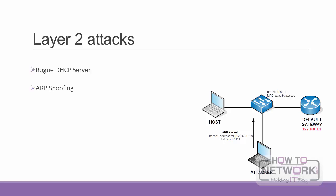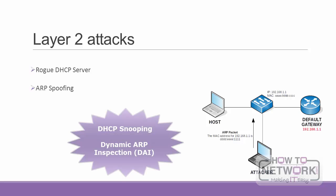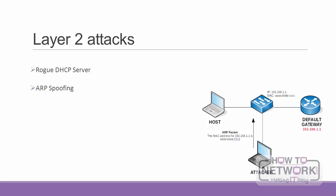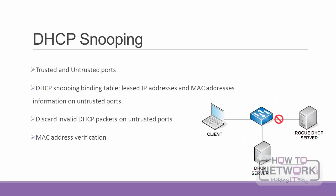Two security features that can be implemented against these attacks are DHCP snooping and dynamic ARP inspection. Dynamic ARP inspection can rely on the information provided by DHCP snooping. There are two types of ports when dealing with DHCP snooping: trusted and untrusted. Trusted ports are where you connect your DHCP servers and trusted devices such as your default gateway, while untrusted ports are for every other user. When you enable DHCP snooping, the switch keeps a DHCP snooping binding table, also called a DHCP snooping binding database, containing entries for the IP address, MAC address, lease time, and other DHCP-related information for untrusted ports.